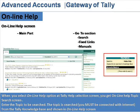When you select the online help option at the Tally help selection screen, you get the online help topic search screen. Enter the topic to be searched and the topic is searched. You must be connected to the internet to access the Tally knowledge base, which is then shown in the online help screen.